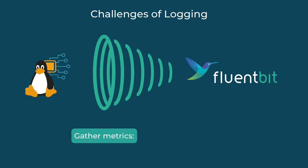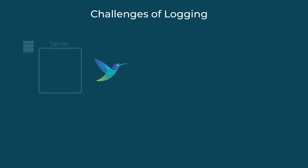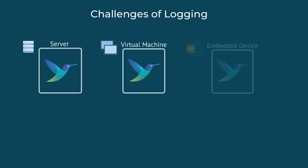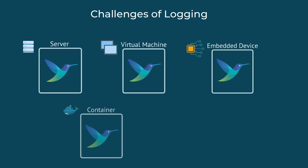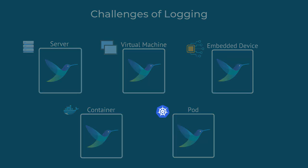For example, it can gather metrics on CPU, memory, storage, etc. And because it's general purpose, FluentBit can be deployed on any environment, like bare metal servers, virtual machines, embedded devices, and containers. However, FluentBit is used the most for processing logs in Kubernetes clusters.